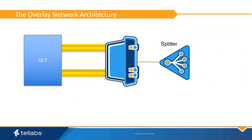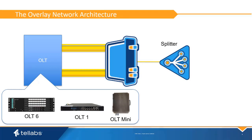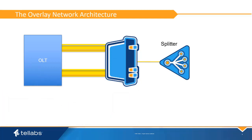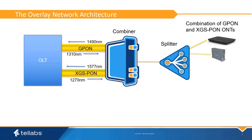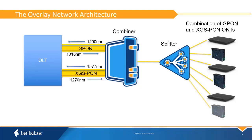Overlay networks are supported on the OLT-6, OLT-1, and OLT-mini using the OIU-8 and OIU-2 PON cards. Each PON port used in the overlay will need an appropriate PON transceiver. Each PON protocol is connected by fiber to a combiner that will place all wavelengths on a single fiber in the splitter. Once installed, a combination of both GPON and XGS-PON ONTs can be deployed on the splitter.